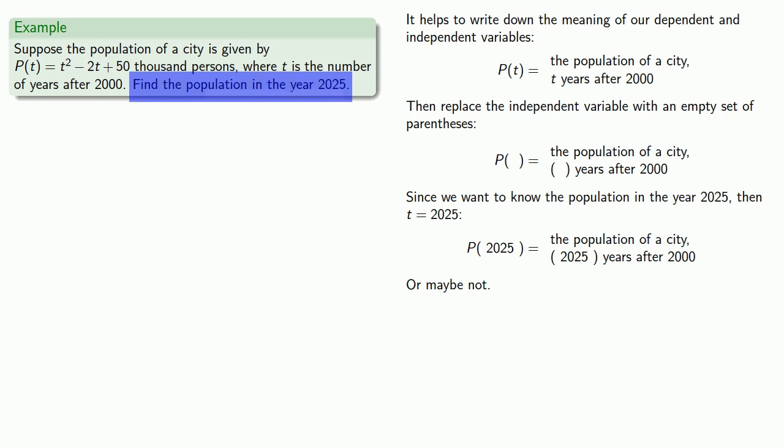What we really need is P(25), the population of the city 25 years after 2000.